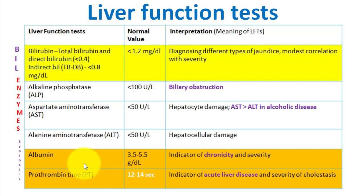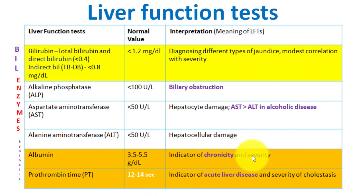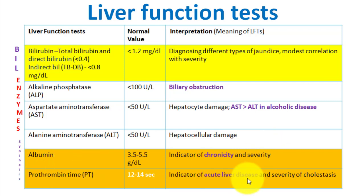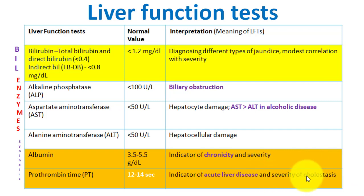Both albumin and prothrombin time reflect severity of disease. Albumin especially reflects severity, and prothrombin time also reflects severity of cholestasis in the liver.